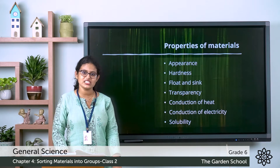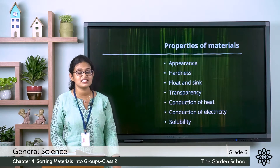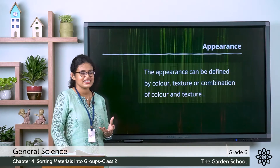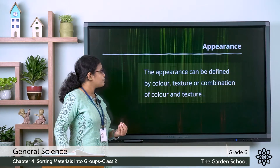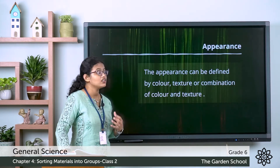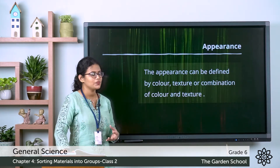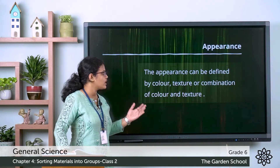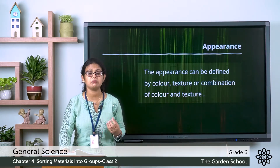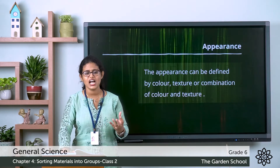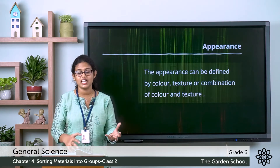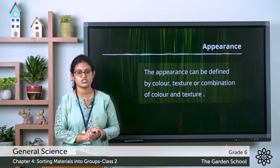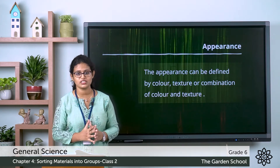Moving to the first one, that is appearance. So what is appearance? The appearance can be defined by color, texture, or a combination of color and texture. That means how a thing looks — its color, its texture, etc. So that is appearance.